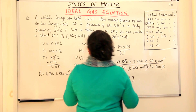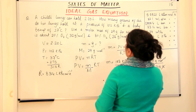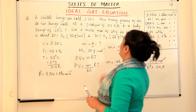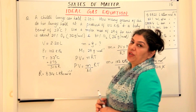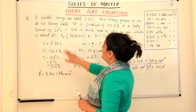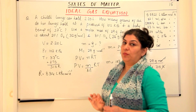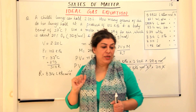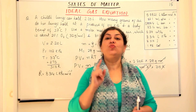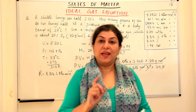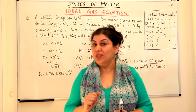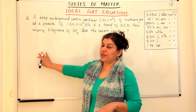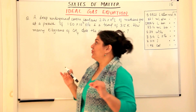So a child's lungs can hold 2.20 litres and would hold 2.524 grams of air at a pressure of 102 kilopascals and a body temperature of 37 degrees Celsius (310 Kelvin), using a molar mass of air of 29 grams per mole. That was question number 2. Let us do one more question, and then in the next video we move on to the NCRT textbook exercises.